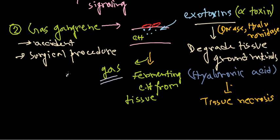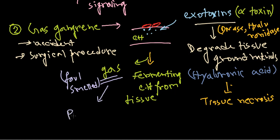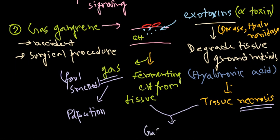As they ferment carbohydrates from the tissues, they produce foul-smelling gases. A lot of gas is produced in the bottom layers of skin and tissue cells, and as a result this gas starts to accumulate there, resulting in a kind of palpation. Combining necrosis of tissues with gas formation, we call this condition gas gangrene.